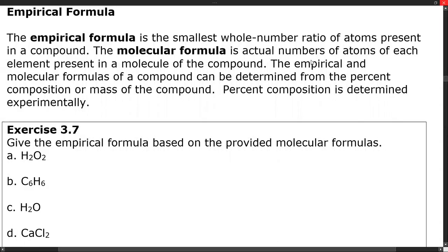Let's talk a little bit about empirical formulas. Empirical formulas are the smallest whole number ratio of atoms present in a compound. The molecular formula is the actual numbers of each atom present in a molecule of a compound. For ionic compounds, in most cases but not all, the empirical formula is the formula of the compound. Empirical and molecular formulas can be the same, but usually the molecular formula is going to be a whole number multiple bigger of some sort.